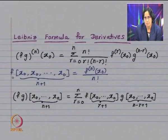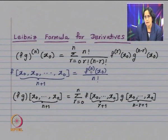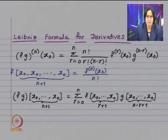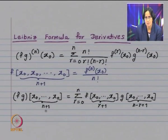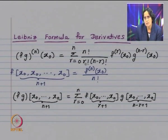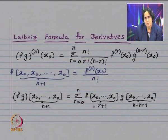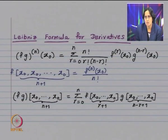The divided difference of f based on x₀ repeated n+1 times equals f^(n)(x₀) divided by n!. Dividing both sides of the Leibniz formula by n!, the left-hand side becomes the divided difference of f·g based on x₀ repeated n+1 times. This equals a summation where r! is associated with f^(r)(x₀), giving the divided difference of f based on x₀ repeated r+1 times.